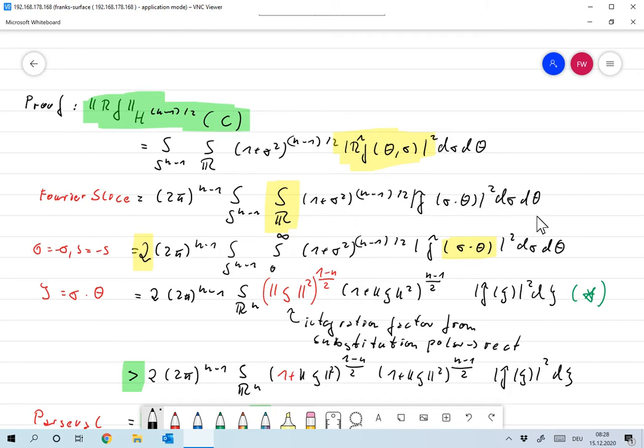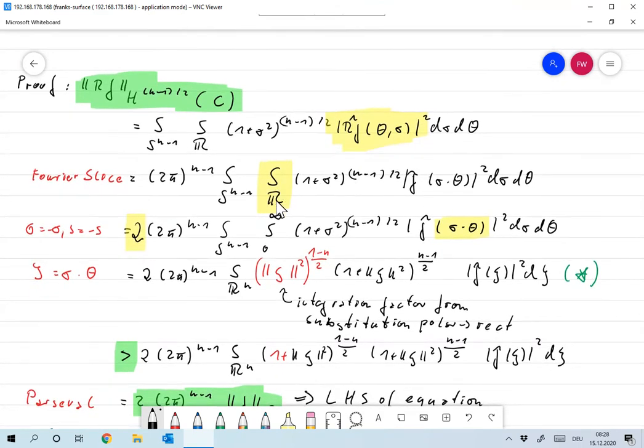Now we go for this integral over R over here, and we already had that before. If in this integral we let sigma go to minus sigma and s go to minus s, then nothing changes. So the positive part of R gives exactly the same, and the negative part of R gives exactly the same contribution. So we can write this as 2 times, because we're now integrating from 0 to infinity, and everything stays as before.